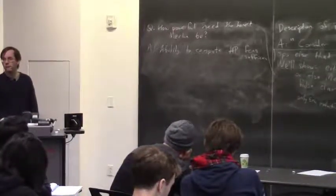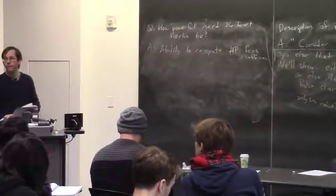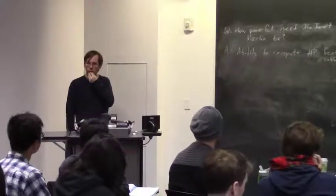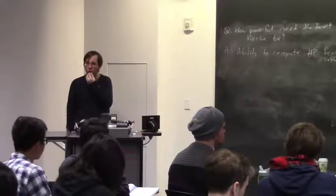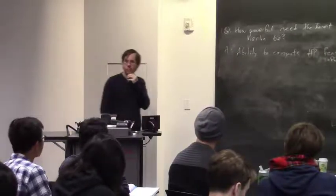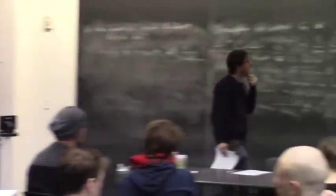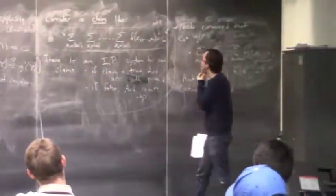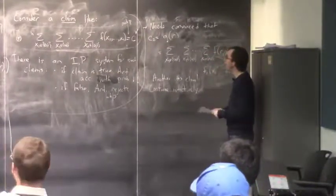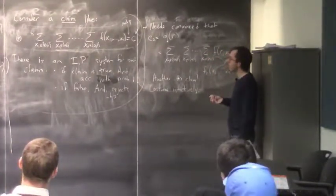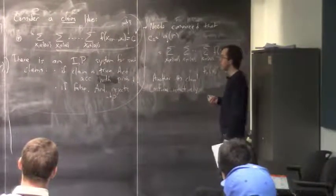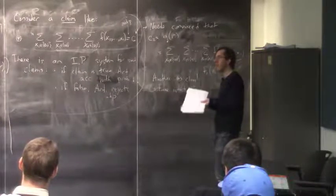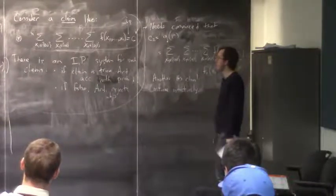A student asks: how can we compute the value of g(Y) for some Y as a SharpP thing? Remember: SharpP counts the number of guess bit strings that lead to acceptance in a nondeterministic Turing machine. After guessing x2 through xn, you can compute f(r, x2,...,xn) explicitly. The answer might be large, but mod p it's a non-negative number, so you can create the exact right number of accepting branches at that node.